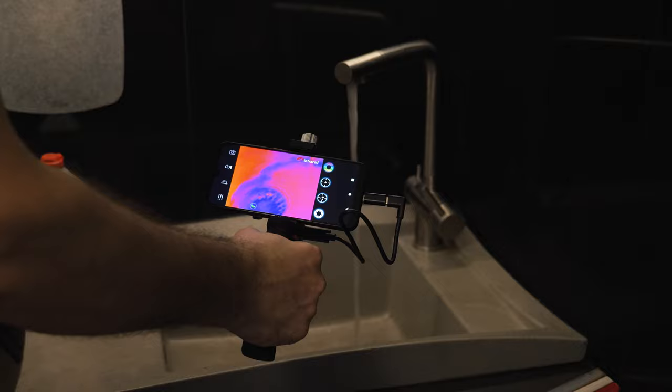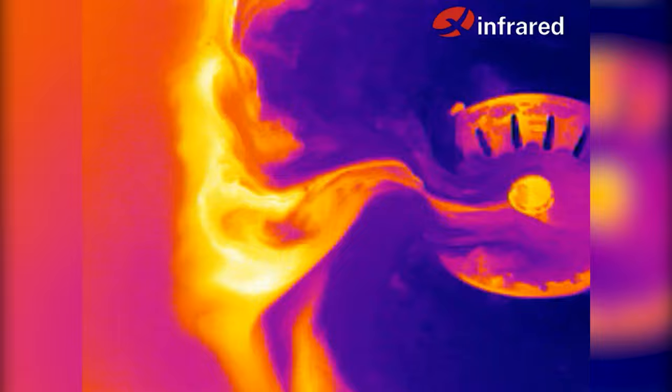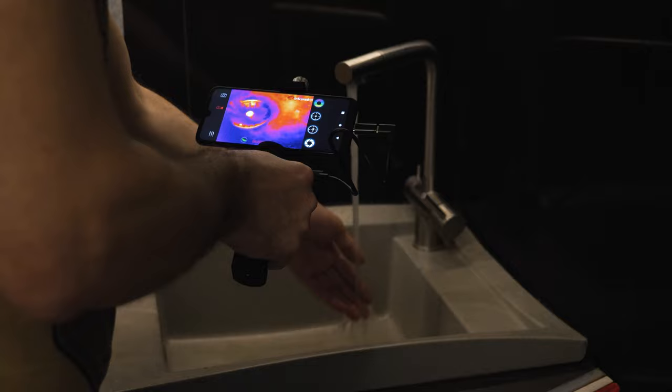Rats also have cold noses. Therefore, the nose on the thermal imager is not clearly visible. And on the contrary, the eyes have a temperature and therefore stand out more.